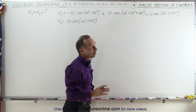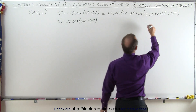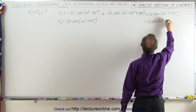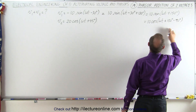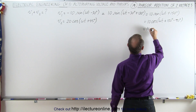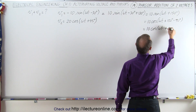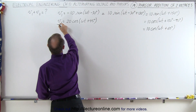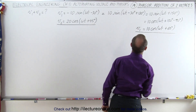Now we want to convert that to the cosine. We can do that by subtracting 90 degrees. So this can be written as 10 times the cosine of omega t plus 150 degrees minus 90 degrees, because that converts it from a sine to a cosine. Combining these two, this becomes 10 times the cosine of omega t plus 60 degrees. So now we have V2 expressed like this, and V1 expressed like this.